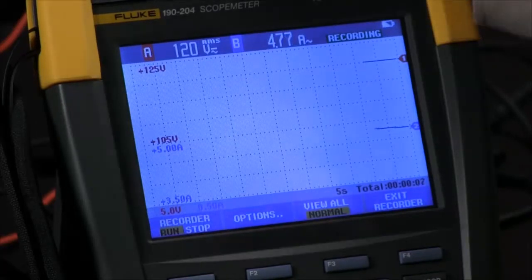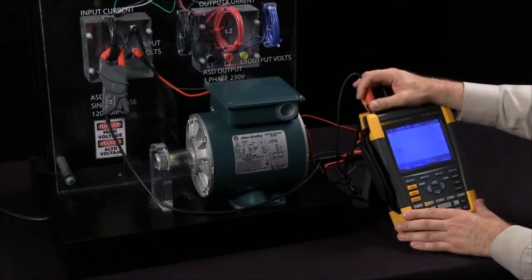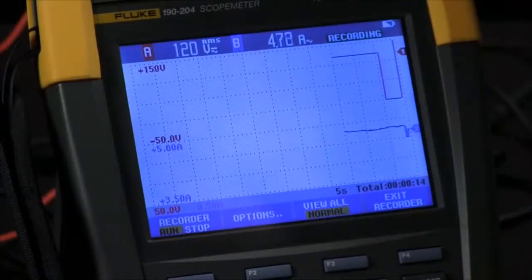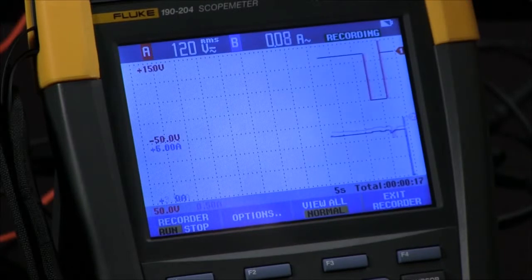If we have an interruption, and I'll cause that by disconnecting the probe, you see how we're dropping out on channel 1 and I can also induce a fault into channel 2.